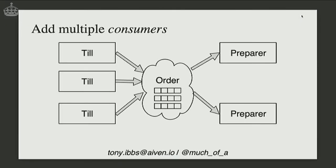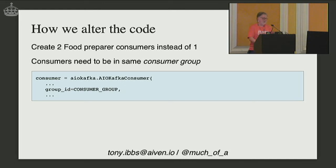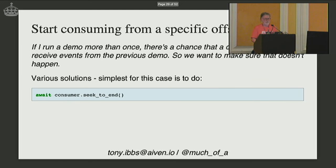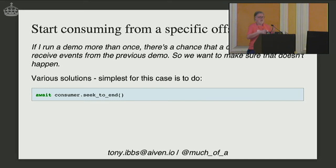So let's add another food preparer. We create two consumers and make sure they're both in the same consumer group — if consumers share a consumer group, messages are shared between them. If I run the demo more than once there may be leftover messages from a previous run; the simplest fix is to tell the consumer to seek to the end of the queue, so the next message received is the next one put on the queue. You can also seek to the start, or store an offset and seek to it later — useful for disaster recovery or auditing.